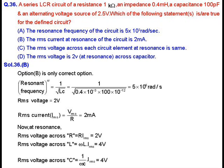At resonance, the RMS voltage across R will be equal to I_rms × R, which equals 2 volts. The RMS voltage across the inductor and capacitor will be the same, calculated as: V_L = ω × L × I_rms = 4 volts, or V_C = (1 upon ω × C) × I_rms = 4 volts. So the correct option here will be option B only.